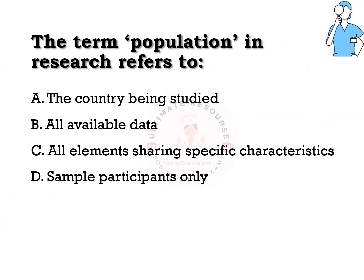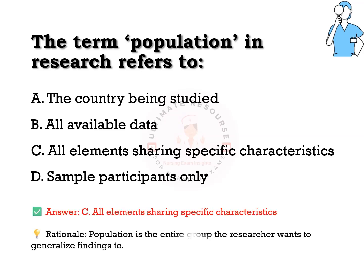The term 'population' in research refers to: options are a) the country being studied, b) all available data, c) all elements sharing specific characteristics, d) sample participants only. The answer is c) all elements sharing specific characteristics. Population is the entire group the researcher wants to generalize.